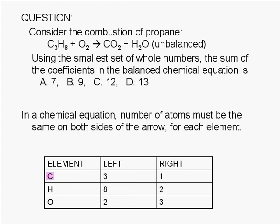Carbon atoms are found in propane on the left. There are three carbon atoms in C3H8. On the right, carbon is found in carbon dioxide. There is one carbon atom in CO2.